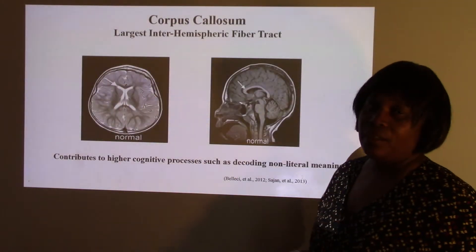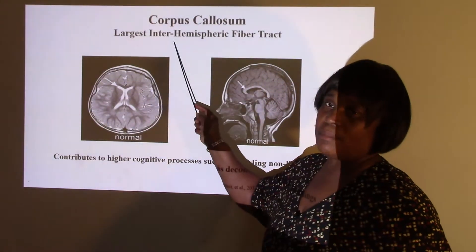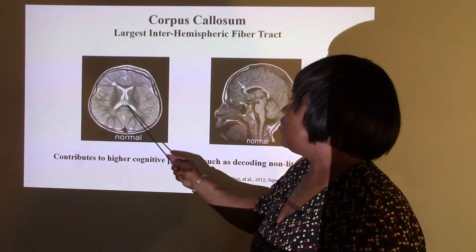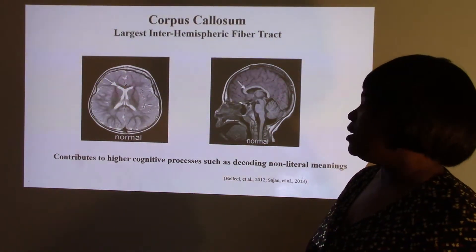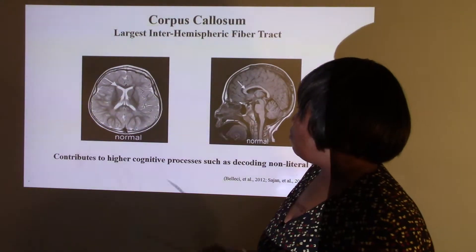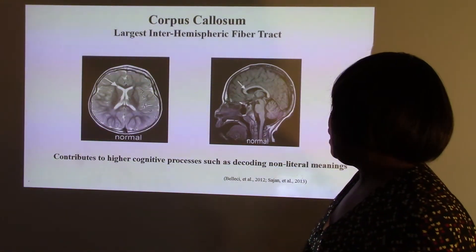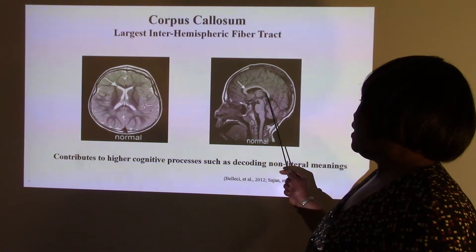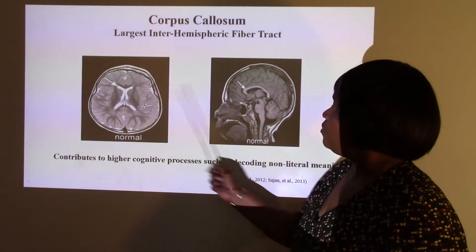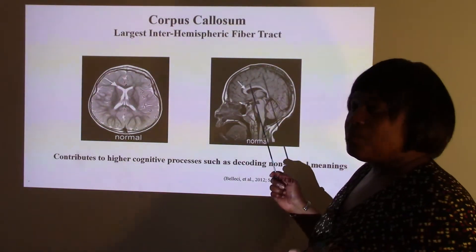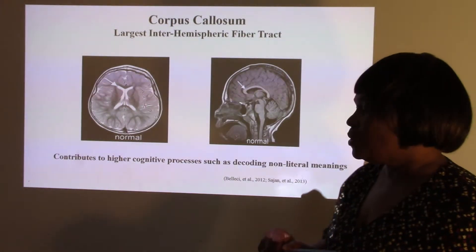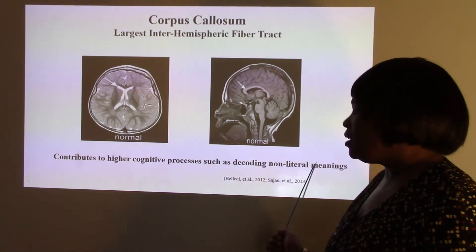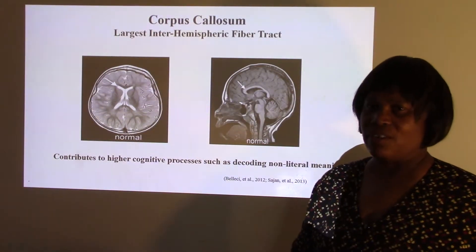Continuing along the line of connectivity, we have the corpus callosum, which I mentioned in previous slides. It's the area that connects the left and right hemispheres. Here we see a healthy adult brain and a side view of the same structure from two different angles. The corpus callosum not only connects the hemispheres but is also significant in higher cognitive processing, such as decoding of non-literal meaning, such as gestures and facial expressions.